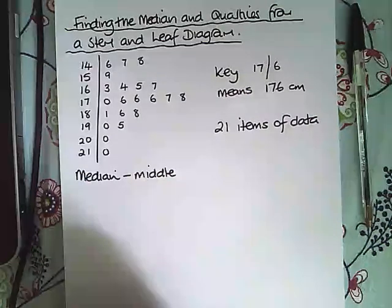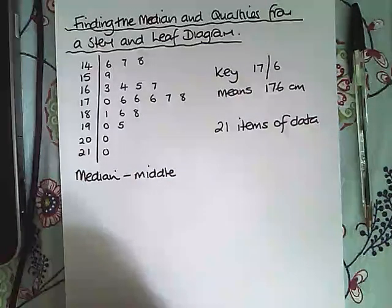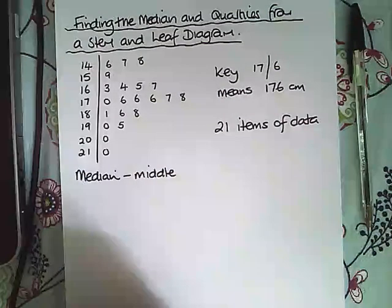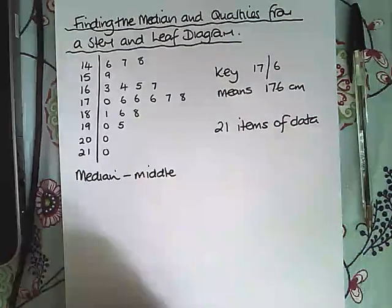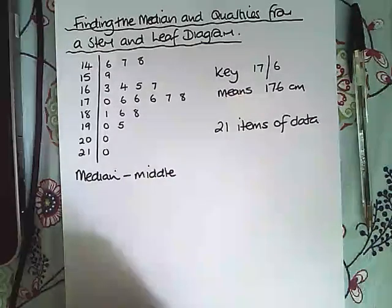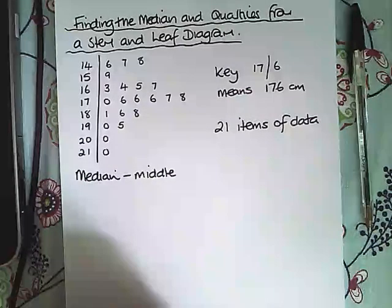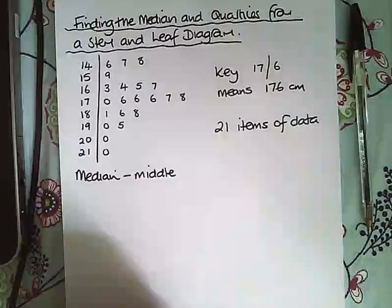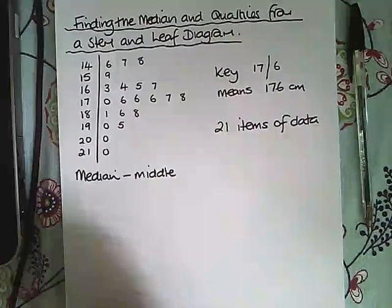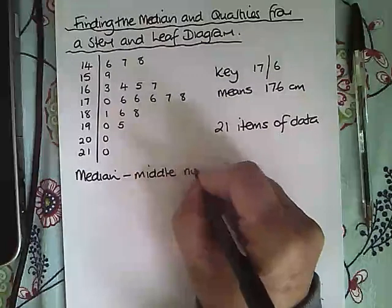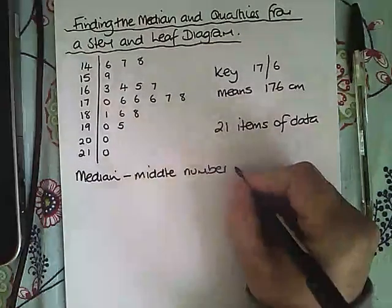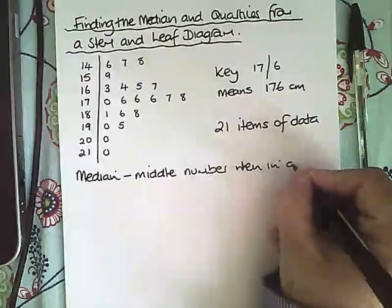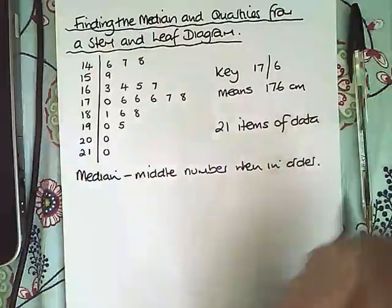If you take a mean of a set of data and you add all the data up and divide by how many pieces there are, then that could be affected by very small numbers or very big numbers. Whereas if you put the data in order and it's the middle number, then that isn't affected by these large or small numbers. So that's why it's useful in statistics, the middle number when in order smallest to largest.